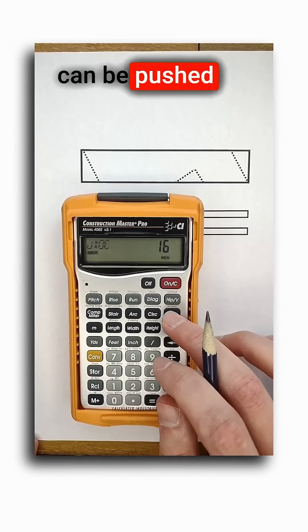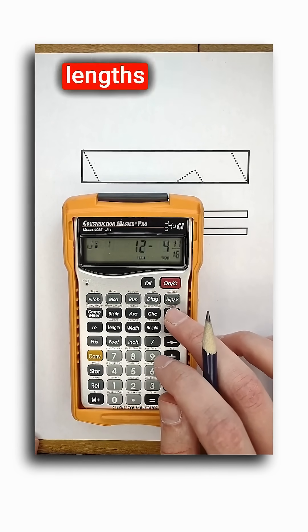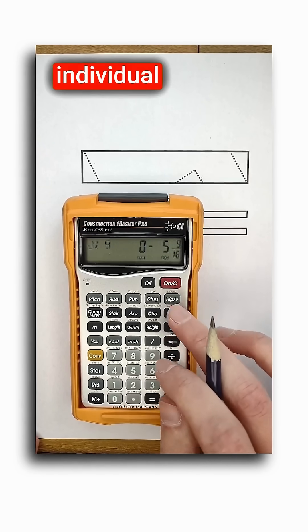Now the jack button can be pushed for the incremental difference in lengths between the jack rafters, as well as all of their individual lengths.